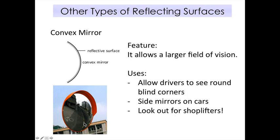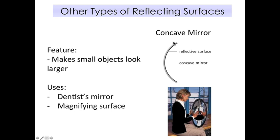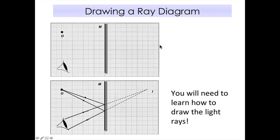A concave mirror curves inwards — just remember 'cave' means inwards. Its key feature is that it makes objects look larger, so it magnifies. For example, a dentist's mirror is concave, which helps magnify the back of your teeth so the dentist can see clearly. The final part of this lesson will be in the next video, where I'll show you how to draw a ray diagram to find where an image forms given an object and a mirror.